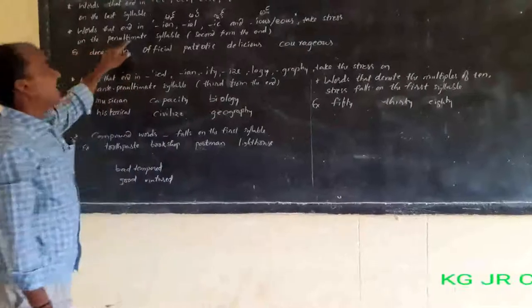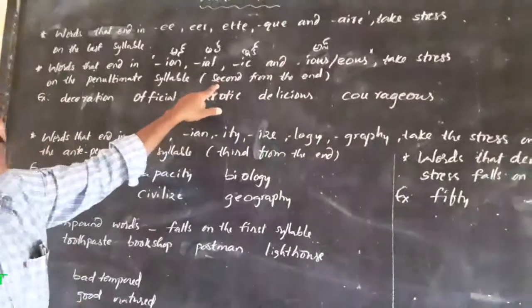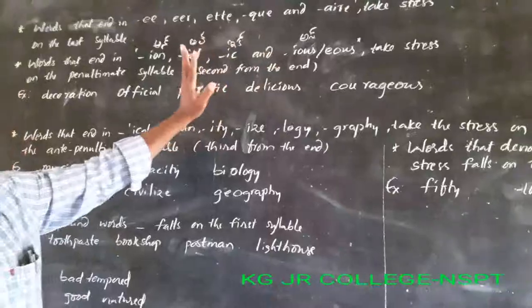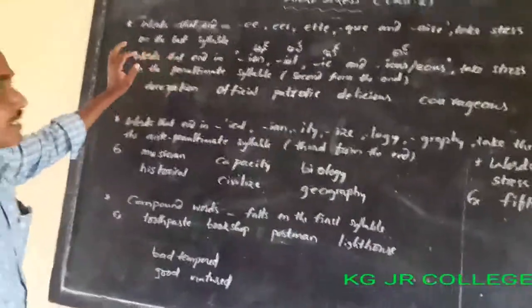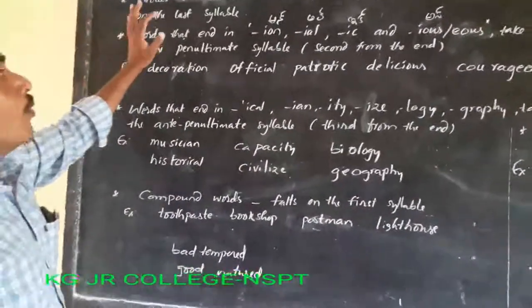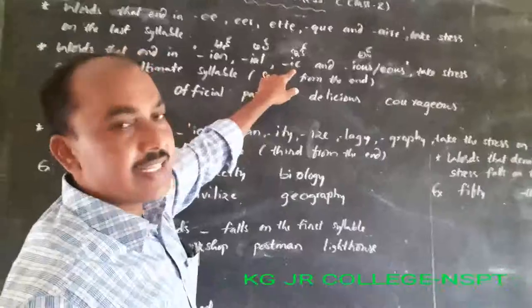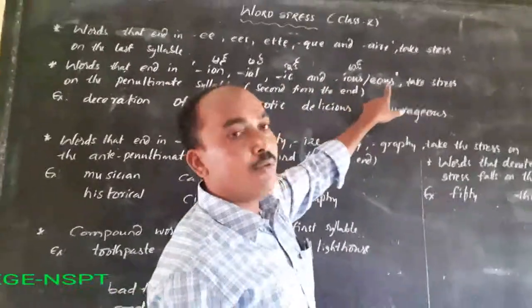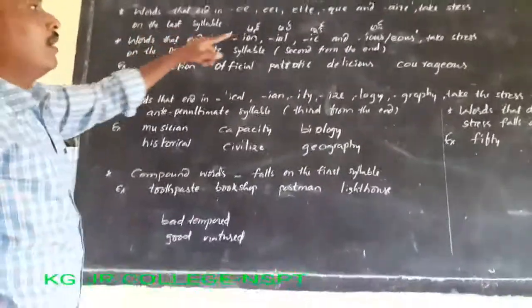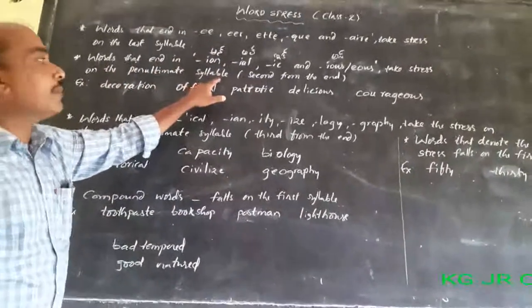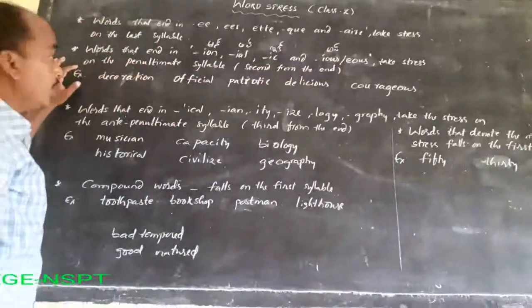Take the stress from the penultimate syllable. What is meant by penultimate syllable? It means the second from the last syllable — the last to second syllable is called the penultimate syllable. Words which end in -ION, -AN, -IAN, -AL, -IC, -ICA, and -IOUS or -EOUS, that is '-As' — when these endings appear, stress falls on the penultimate syllable, which is the second from the end of the word.